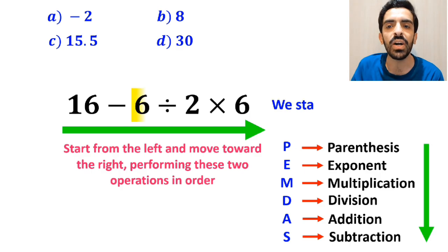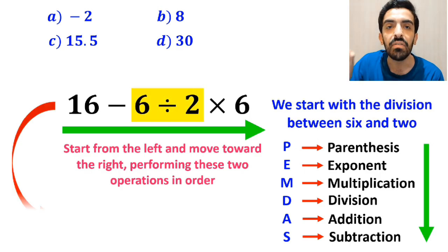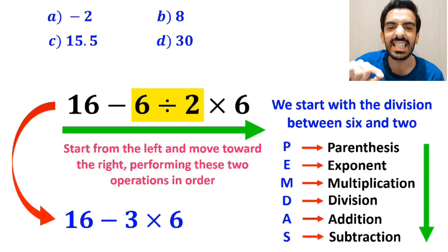So, first we start with the division between 6 and 2, which simplifies this expression to 16 minus 3, then multiply it by 6.